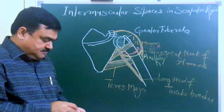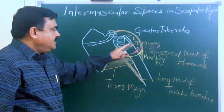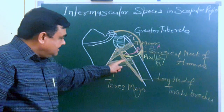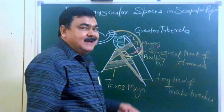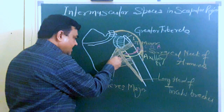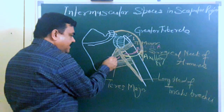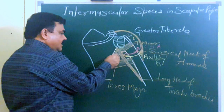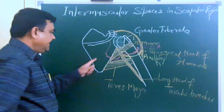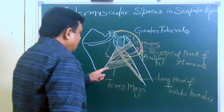Now, the upper triangular space: it is bounded superiorly and medially by teres minor, inferiorly by teres major, and laterally by the long head of triceps. The content is the circumflex scapular artery. This is the circumflex scapular artery — it pierces the teres minor muscle and here it anastomoses with the suprascapular artery.